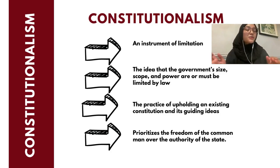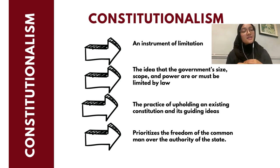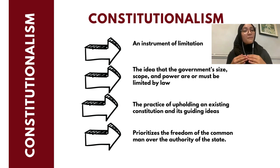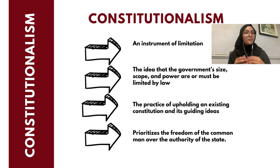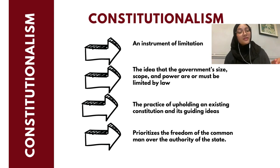To conclude what constitutionalism is: we can say that it is an instrument of limitation — the idea that the government's size, scope, and power must be limited by law. It is the practice of upholding an existing constitution and its guiding ideas, and it prioritizes the freedom of the common man over the authority of the state.